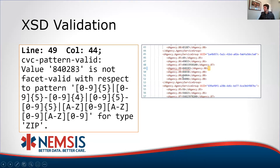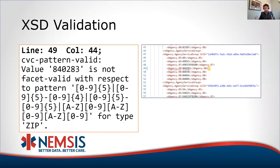The XML schema validator is looking at a data element that claims to comply with the zip data type but in this case it doesn't — it has six numbers instead of something fitting the pattern. I've shown the actual XML data that caused this problem, and we can see it's in dAgency.08 inside a particular agency service group. Line 49 is where the error was; column 44 is right after the closing bracket of the end tag — so for your software to pinpoint the problem, this gets pretty complicated.